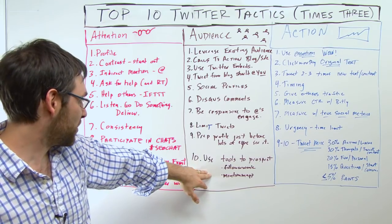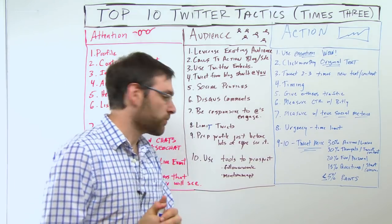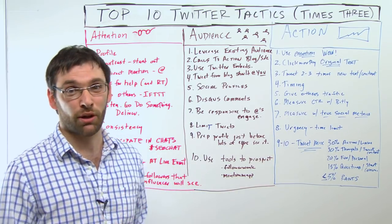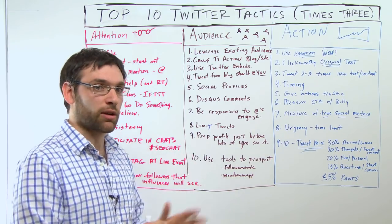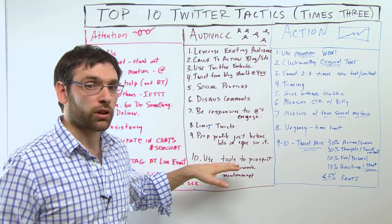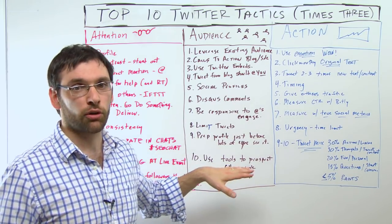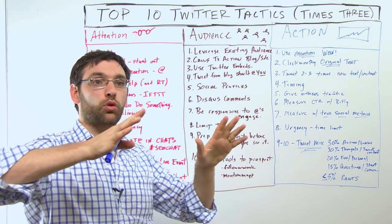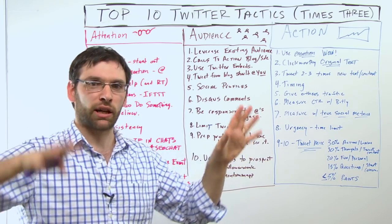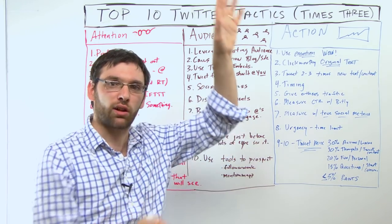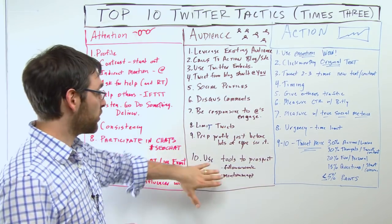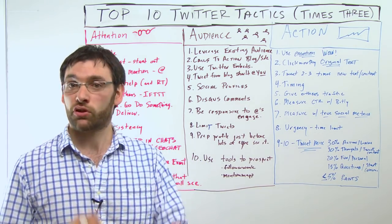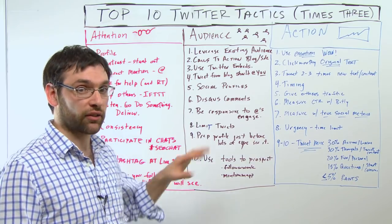Number ten: use tools to prospect. If you're trying to grow your audience and find influencers, you can use Followerwonk or a great tool called Mention Map, which shows you a cool map of who talks to who — like if Mike King talks to John Doherty a lot, you'll see that on a map. These are two great tools if you're trying to grow your influence and reach out to people.